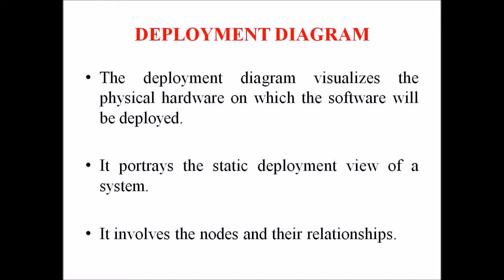It involves the nodes and their relationships. A deployment diagram ascertains how software is deployed on hardware and it maps to the software architecture created in design to the physical system architecture where the software will be executed as a node. Since it involves many nodes, the relationship is shown by utilizing the communication path.